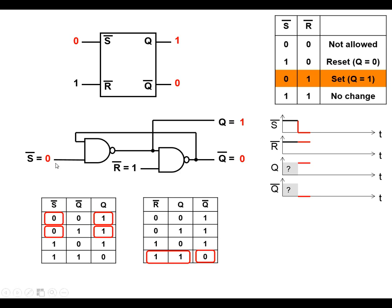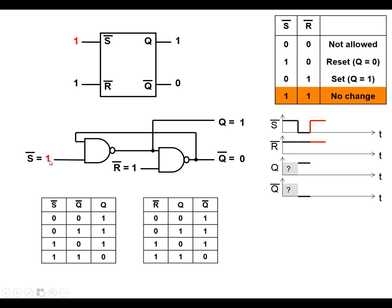If we make the set input go high again, we've got a 0 from Q-bar coming in here. And because we've got that 0 from Q-bar, it means that Q stays high. Looking at the second NAND gate, both inputs are high, which means the output is low. So there's this feedback: Q-bar feeding back into the first gate means that Q stays high.